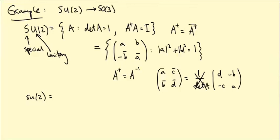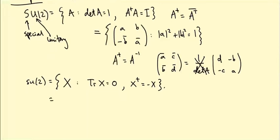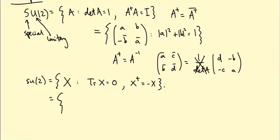The Lie algebra su(2) consists of matrices X such that trace(X) = 0 (from the determinant condition) and X† = −X (the anti-Hermitian condition, the analog of anti-symmetric). I won't justify this here — it follows from similar arguments to those already seen in the course.